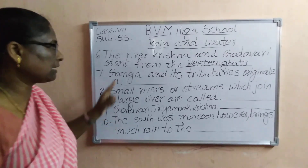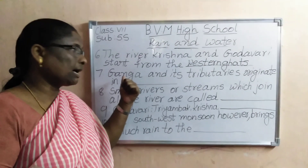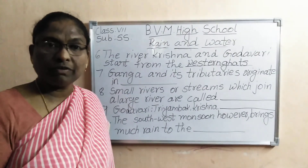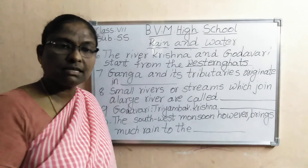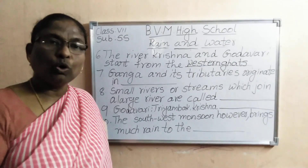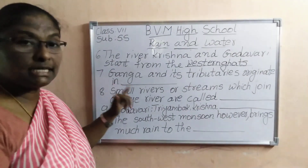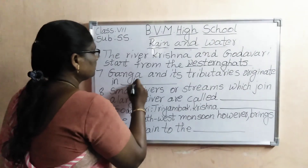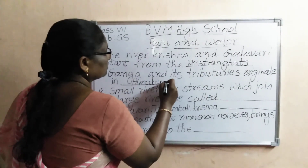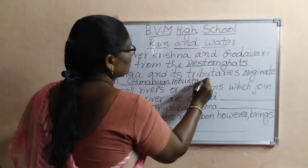Seventh one: Ganga and its tributaries originate in dash. Where does Ganga originate? What is the birthplace of Ganga? It is in the Himalayan mountains, at Gomukh. Ganga and its tributaries originate in the Himalayan mountains.